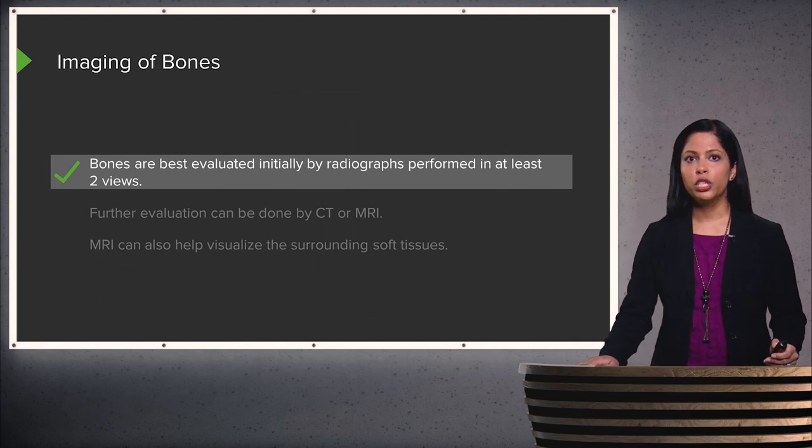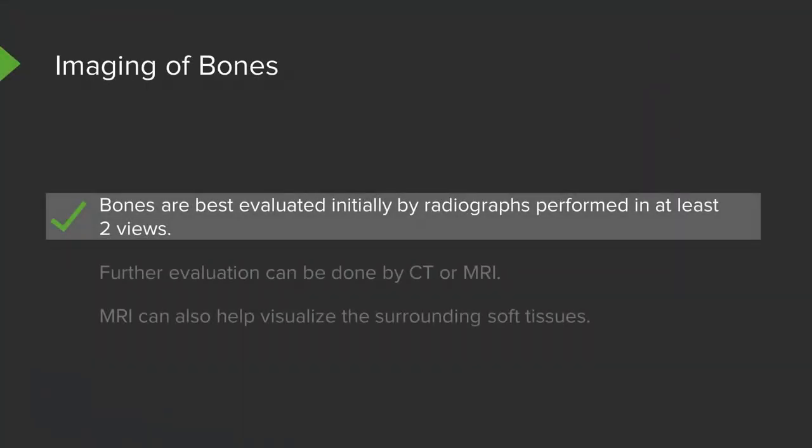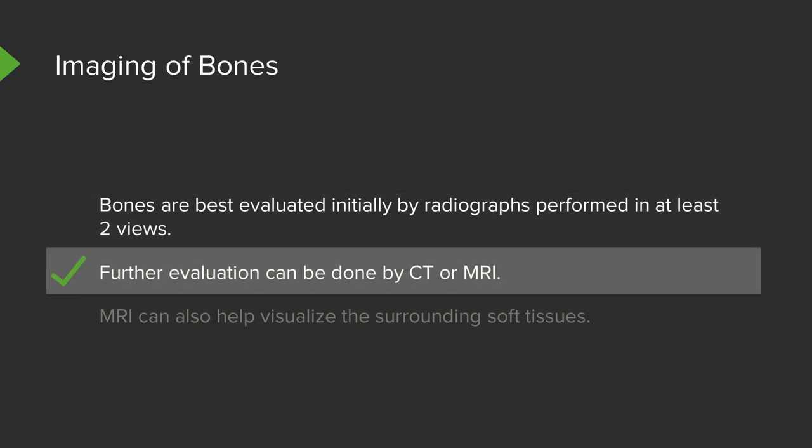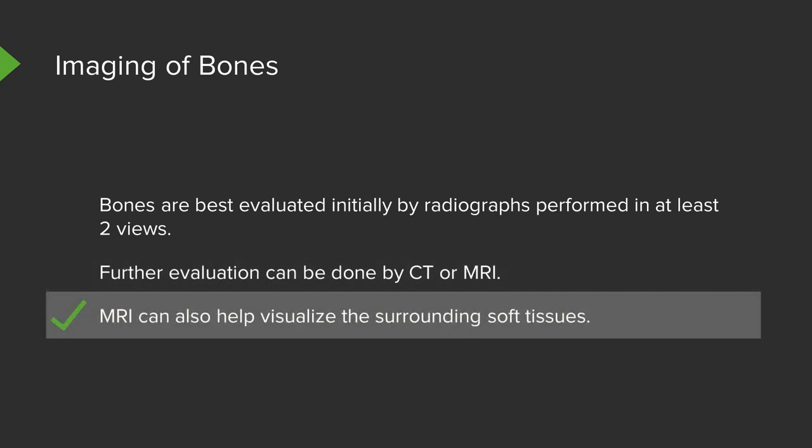When you're imaging bones, the images are best evaluated in at least two different projections, because you're taking a look at a 3D structure using a 2D image. If the radiograph isn't telling you what you need, then you further evaluate with CT or MRI. MRI is also very useful in visualizing the surrounding soft tissues.